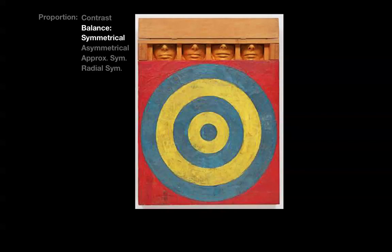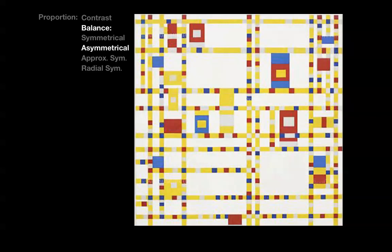This assemblage by Jasper Johns is a great example of symmetrical balance. Symmetry is a mirrored sense of balance — the left half of the composition is virtually identical to the right half.